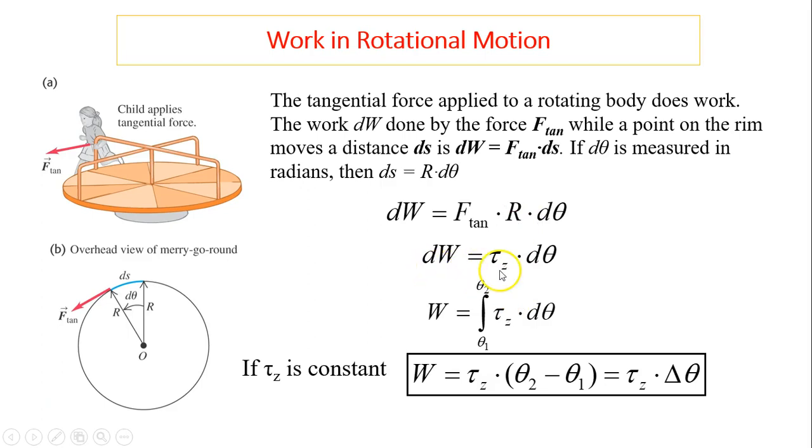So dw equals torque times d theta. To find work while the child applies force for a displacement from theta 1 to theta 2, you integrate it. If torque z is constant, then w equals torque times delta theta, which is very similar to force times displacement.